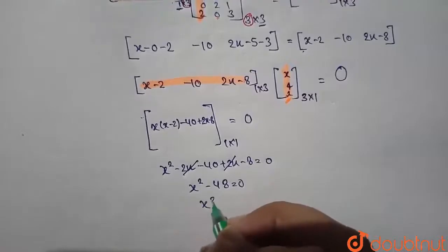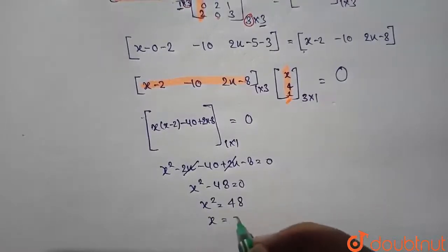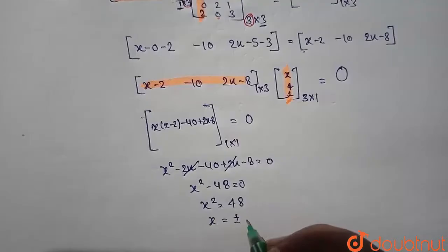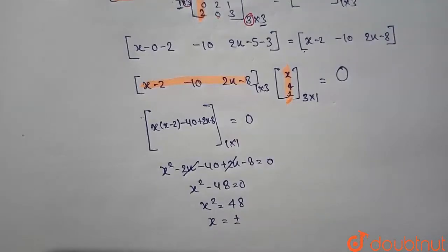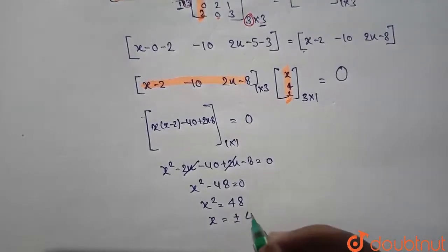Then x² will be equal to 48. x is equal to plus minus root 48, and root 48 will be equal to 4 root 3.